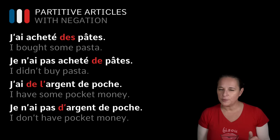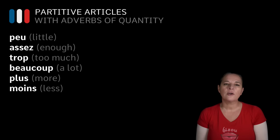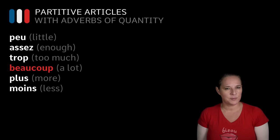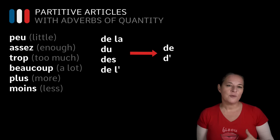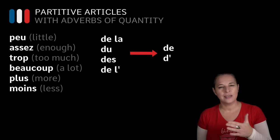So now, what happens when we use adverbs of quantity with partitive articles? An adverb of quantity could be something like: PEU, which means little; ASSEZ, which means enough; TROP, which means too much; BEAUCOUP, which means a lot; PLUS, which means more; MOINS, which means less. Now the partitive articles DE LA, DU, DES, DE L' also become DE or D' when using these quantity adverbs.